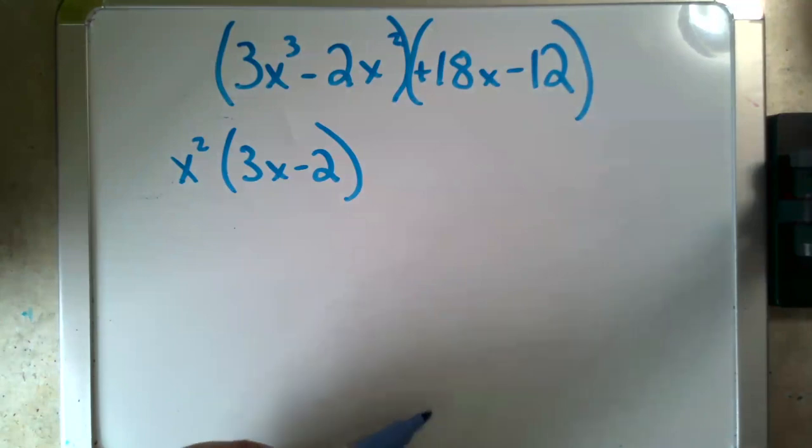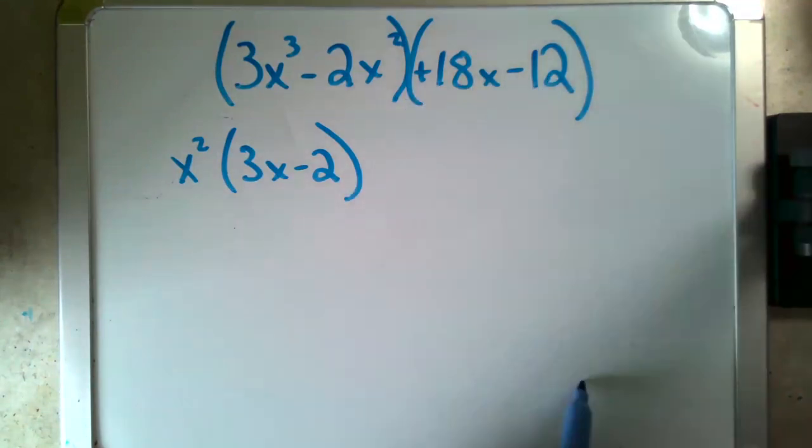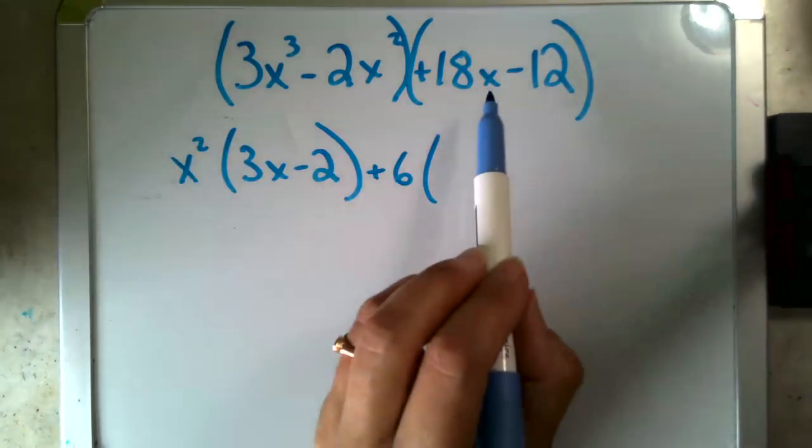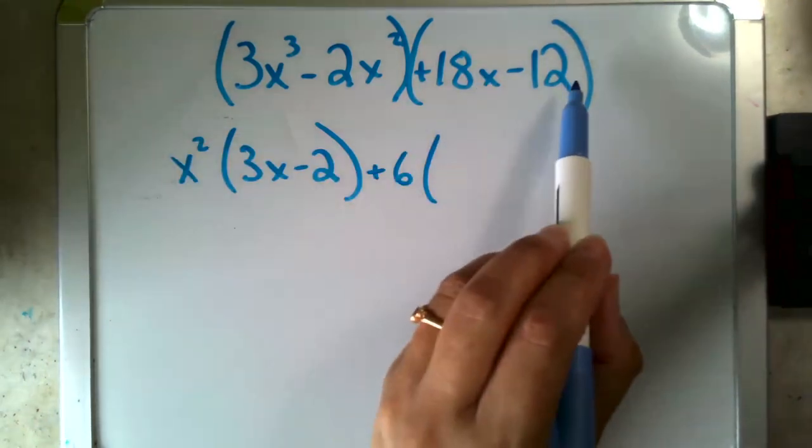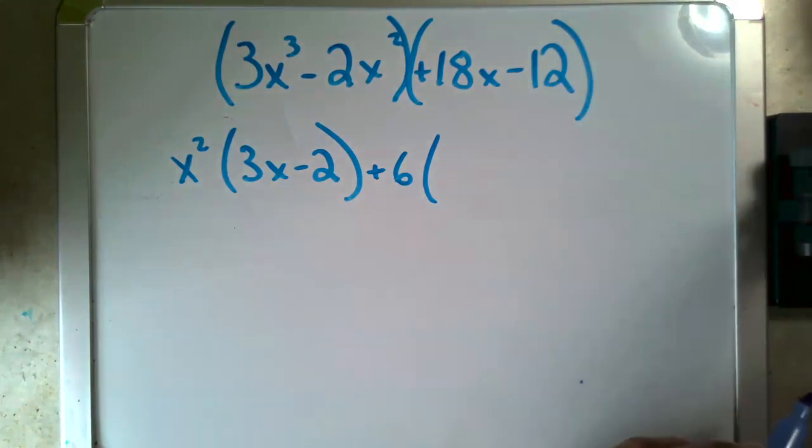Now, I go here, 18 and 12, those share a common factor. A 6 divides out of both of those. When I check my x's, this has an x, this does not, so I can't factor an x out. So 6 is all I got. And when I factor that out, I am left with 3x minus 2.